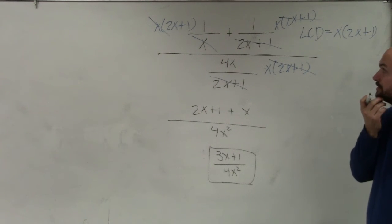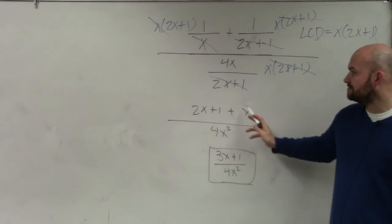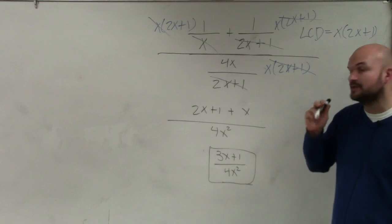What x? Go. 2x plus x becomes 3x and then plus 1.